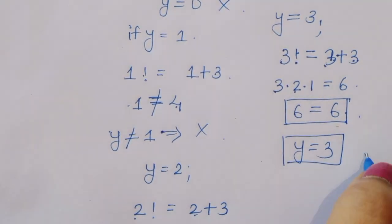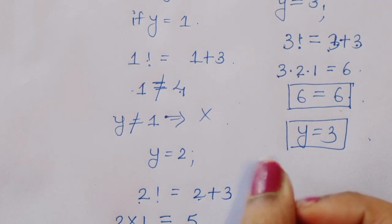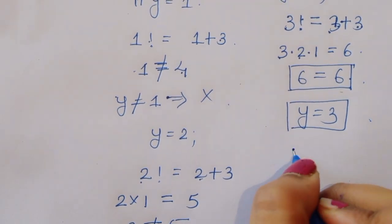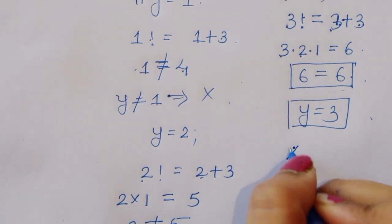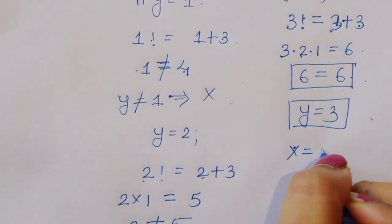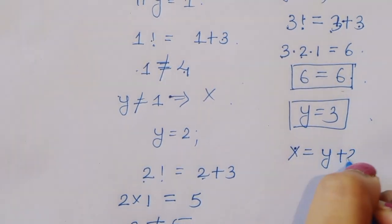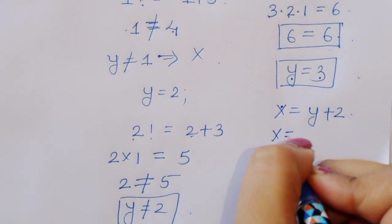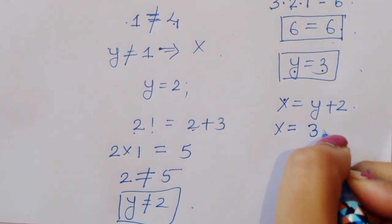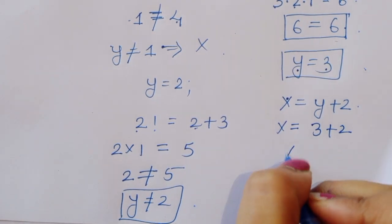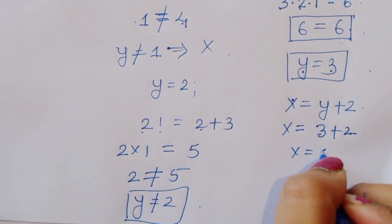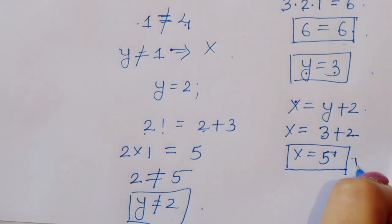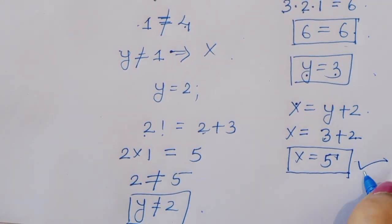We already set x equal to y plus 2, and we need to find x. Since y equals 3, we get x equals 3 plus 2, which means x equals 5. So the value of x is 5. This is our solution. Thank you.